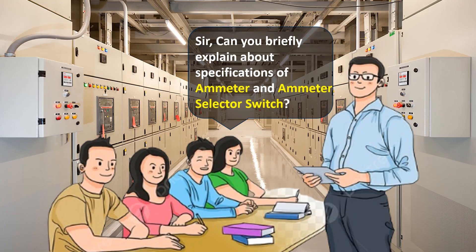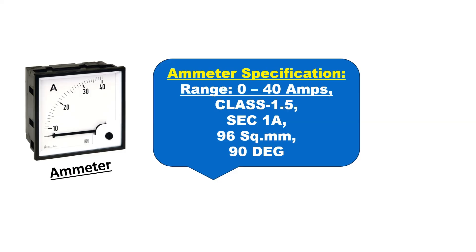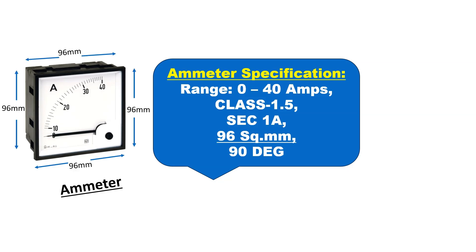The ammeter specification range is from 0 to 40A, which means it can measure electrical current from 0 to 40A. Class 1.5 refers to the accuracy of the ammeter, meaning it has an accuracy of plus or minus 1.5% of the reading. Secondary 1A indicates that when the ammeter receives a secondary current from the current transformer of 1A, the measured full-scale value will be 40A.